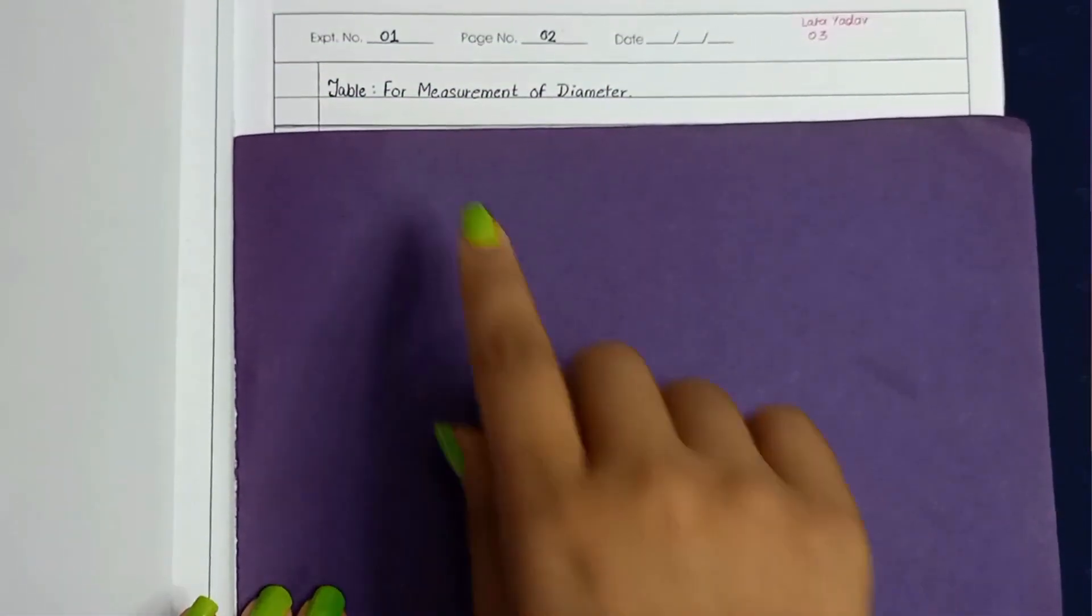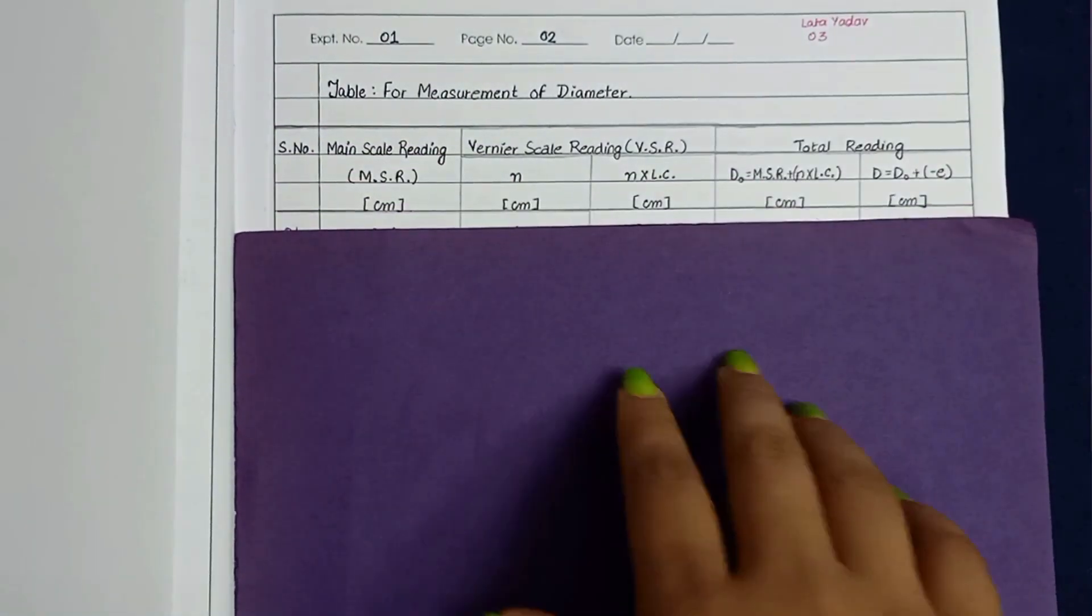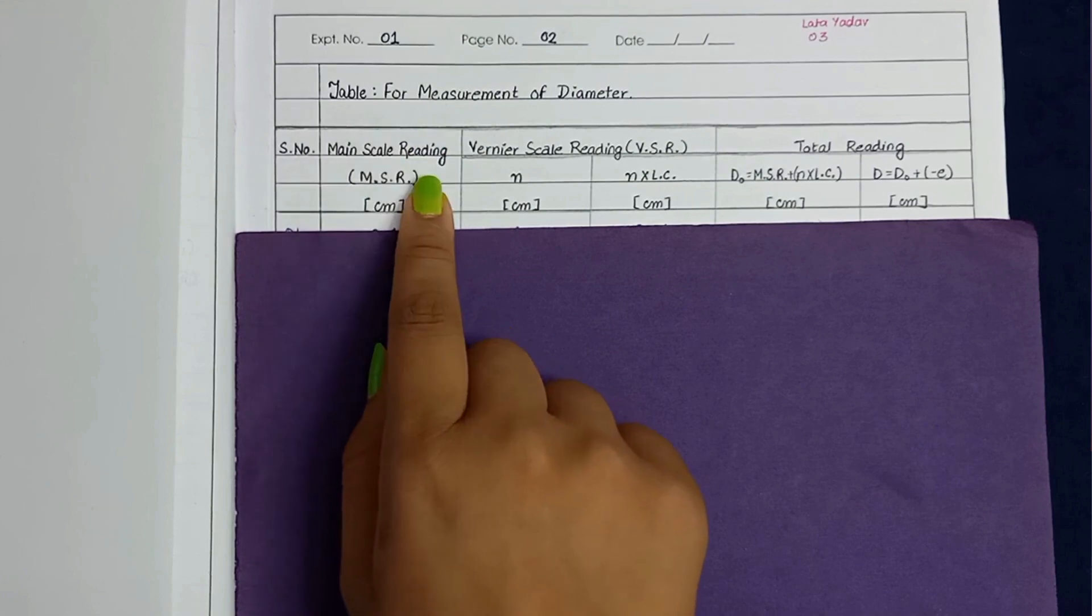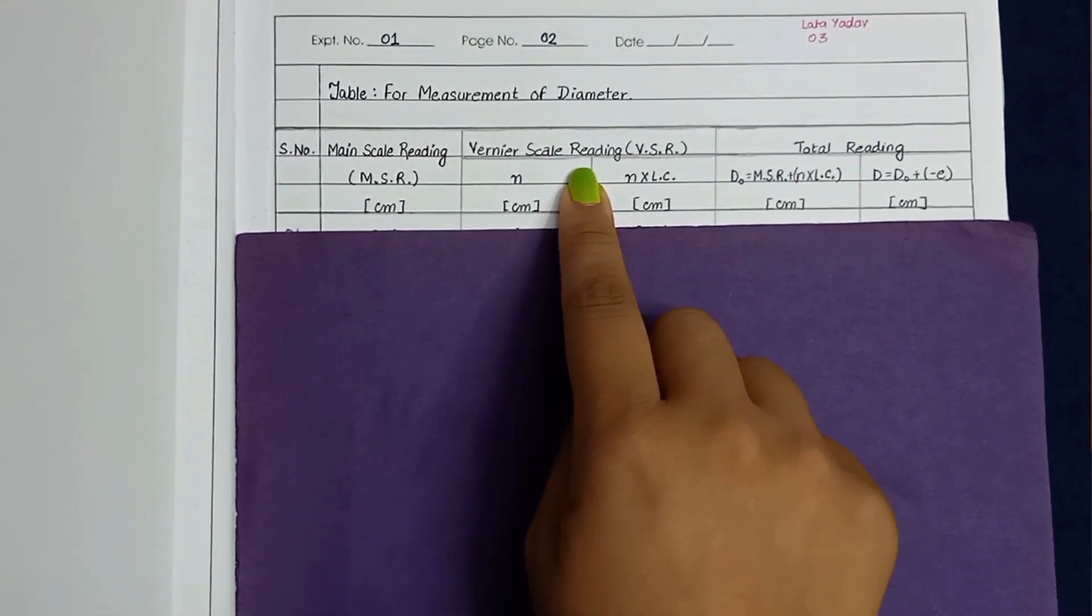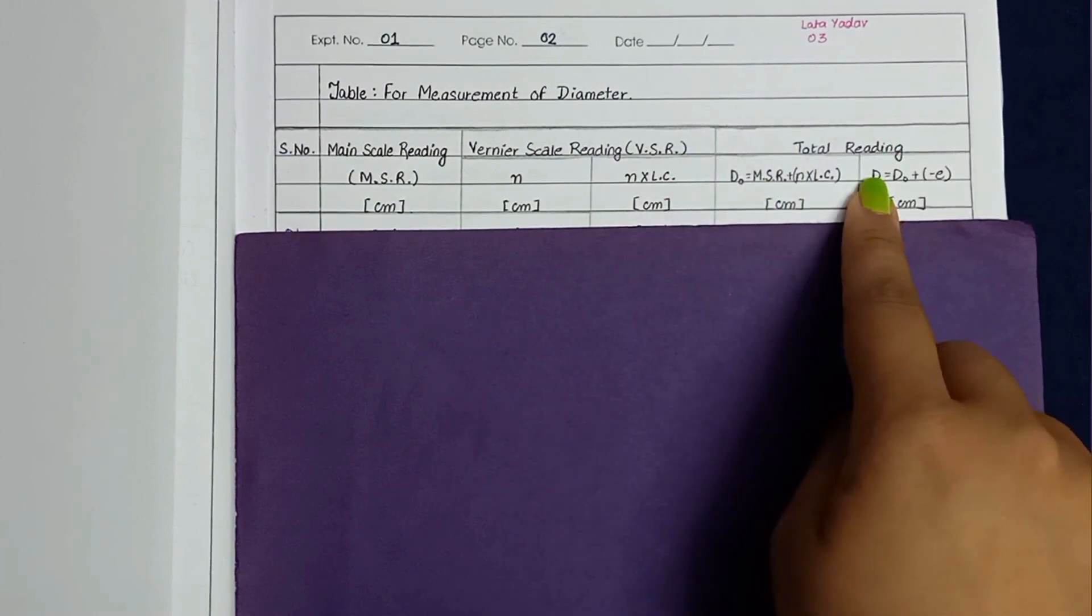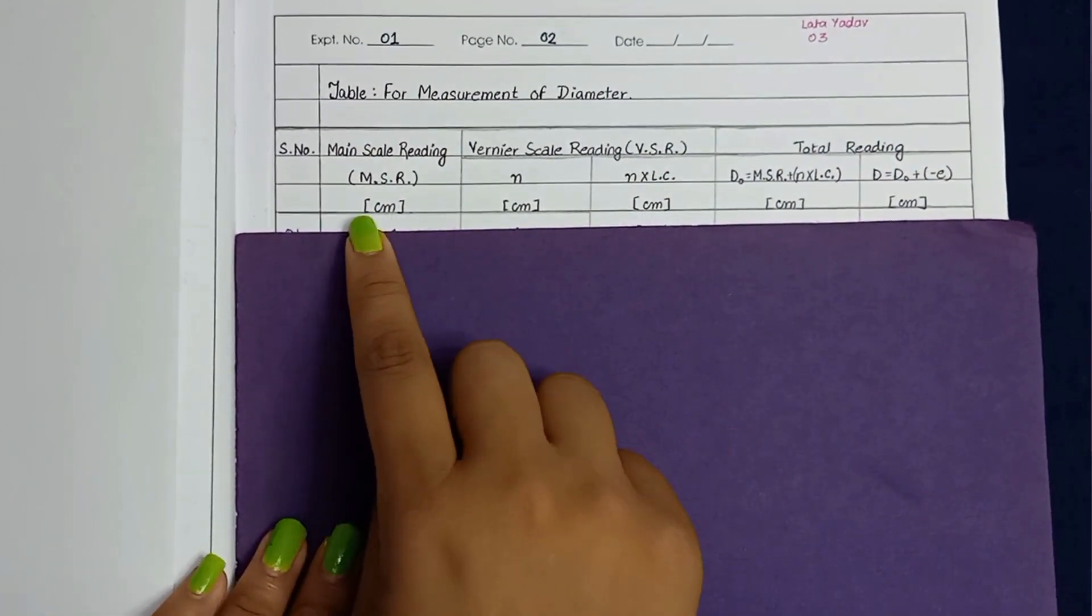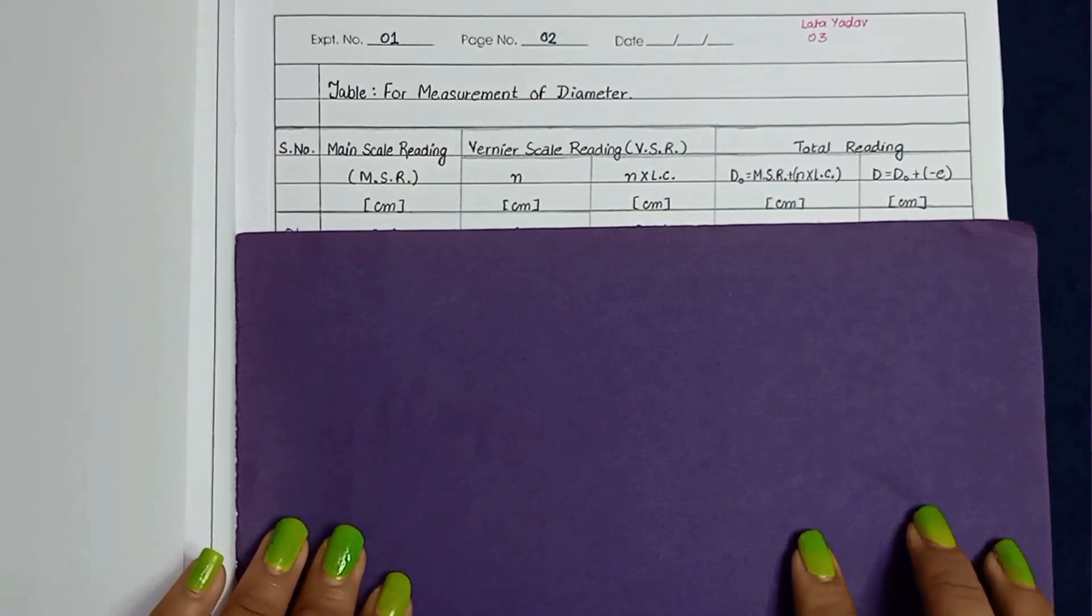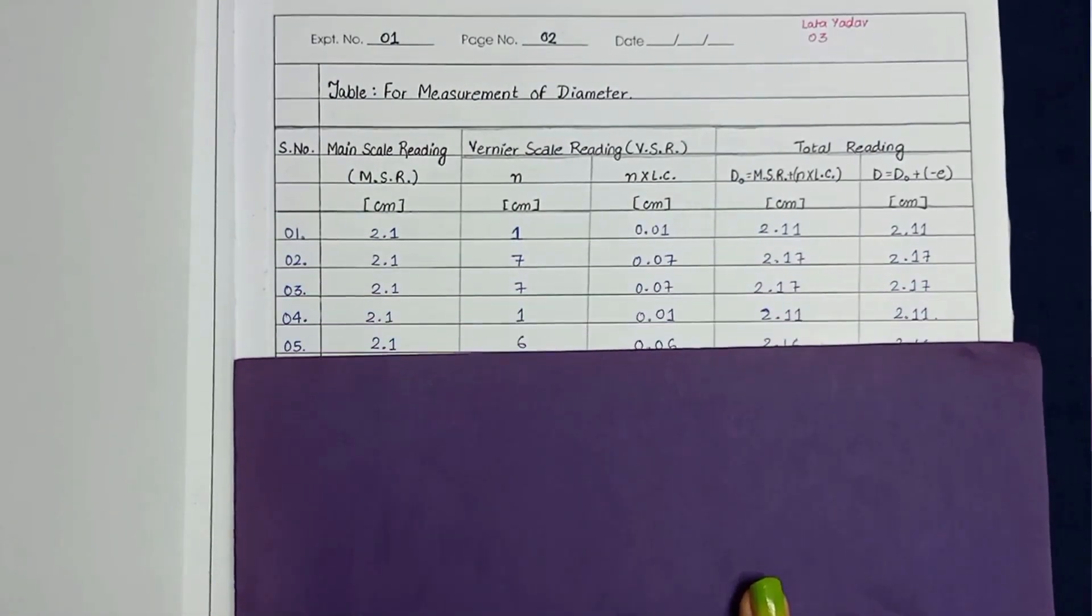Next, observation table: table for measurement of diameter. Here, in the first column, I have written serial number, second column for main scale readings, and third column is vernier scale readings. And the last column is for total readings. And I have also written their unit here in square brackets. So these are the readings of this experiment.